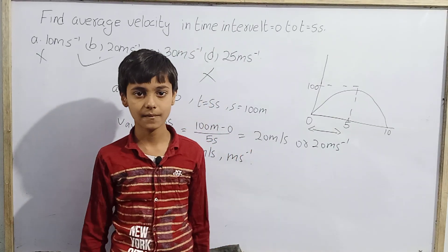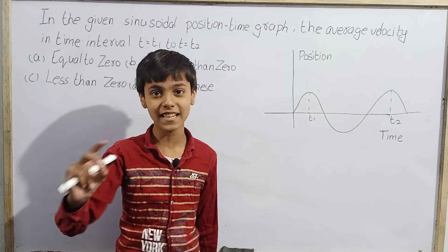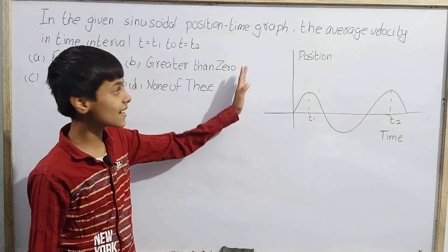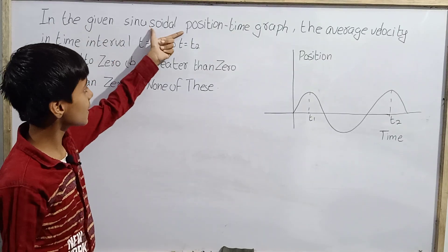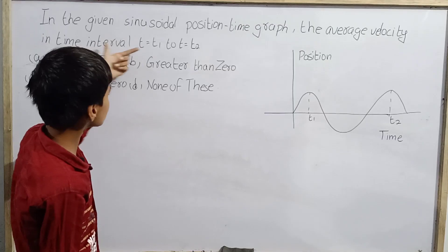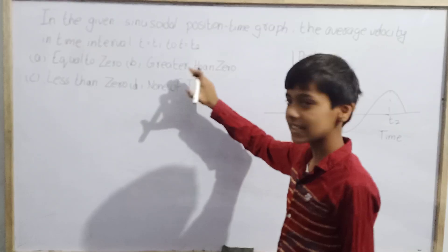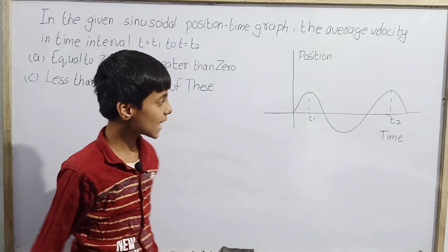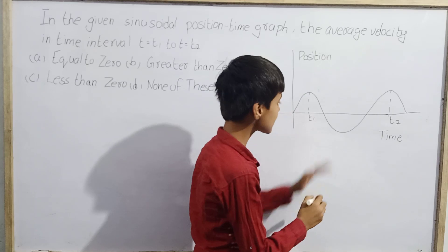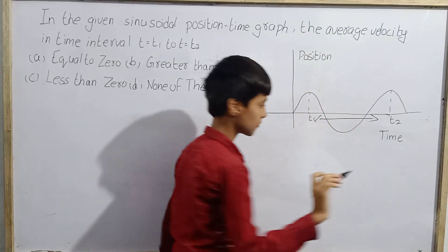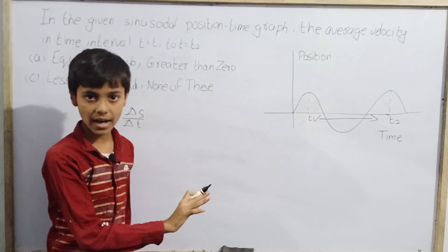Now for question 3. This question gives us a sinusoidal position-time graph and asks: what is the average velocity in the time interval from t = t1 to t = t2? The options are: A) equal to zero, B) greater than zero, C) less than zero, D) none of these.